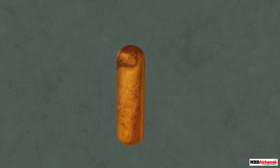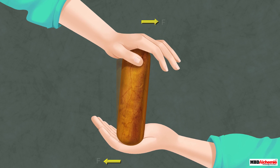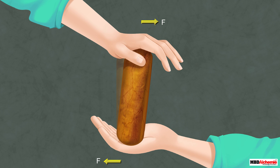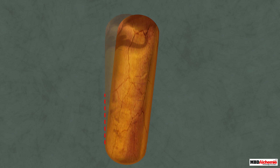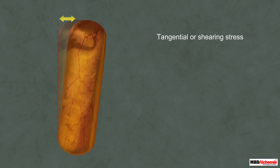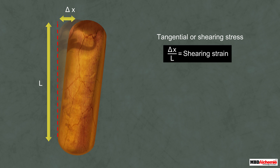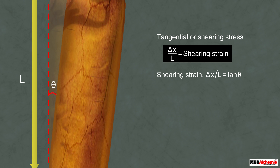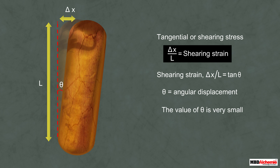Let us now understand tangential or shearing stress. Take the clay cylinder again and apply force using your hands on both faces of the cylinder in opposite directions, but this time the force should be parallel to the cross-sectional area. You will observe a relative displacement between the two faces. The stress developed is called tangential or shearing stress. The ratio of the relative displacement Δx to the length L is known as shearing strain, expressed as Δx/L = tan θ, where θ is the angular displacement. Since θ is generally very small, tan θ ≈ θ.